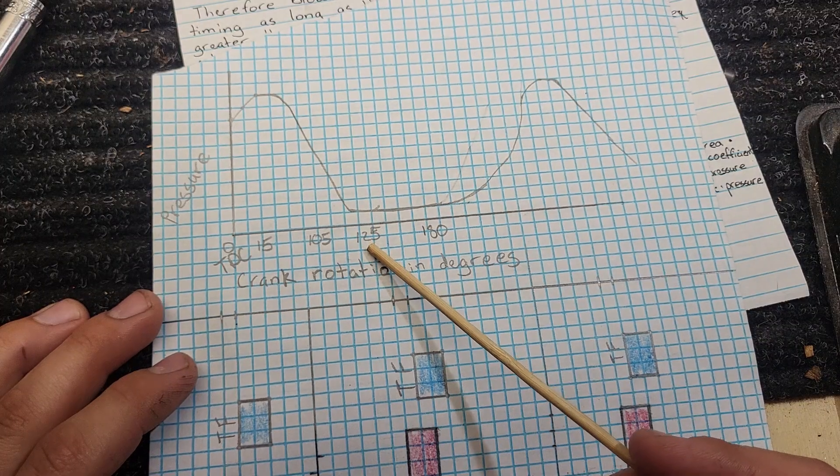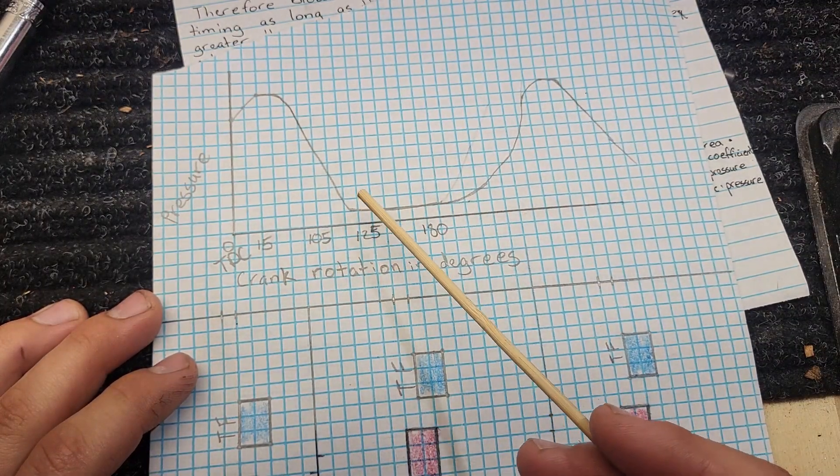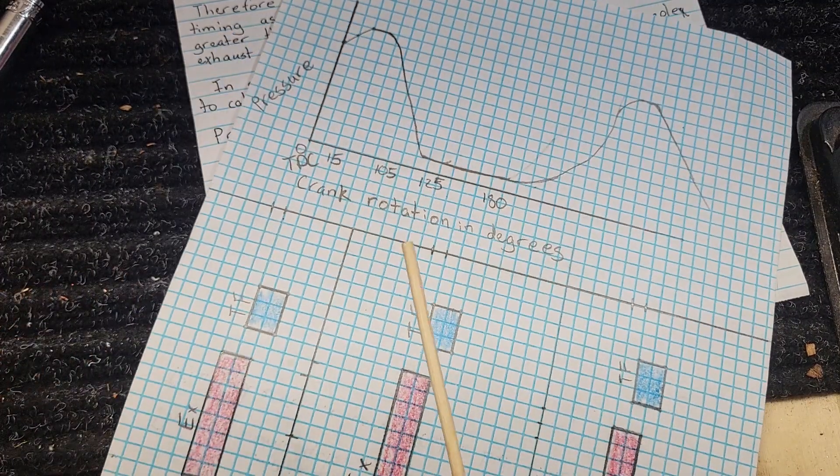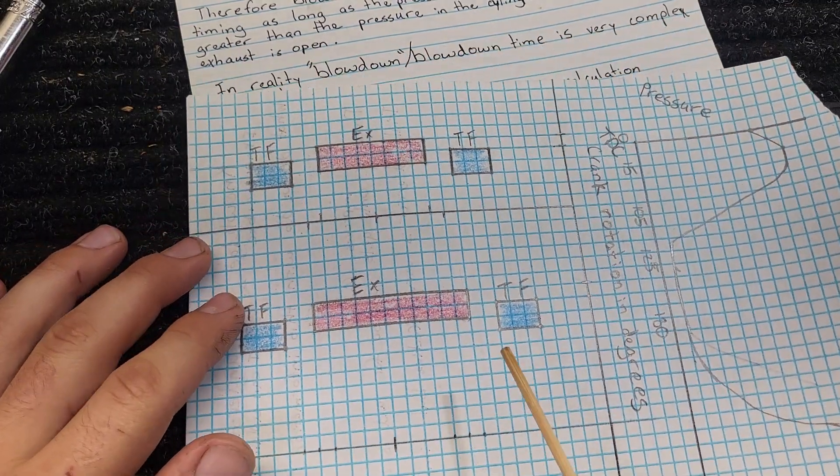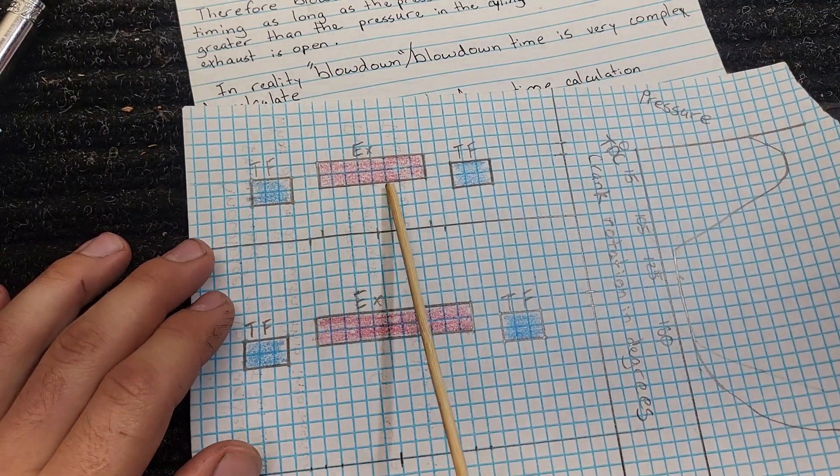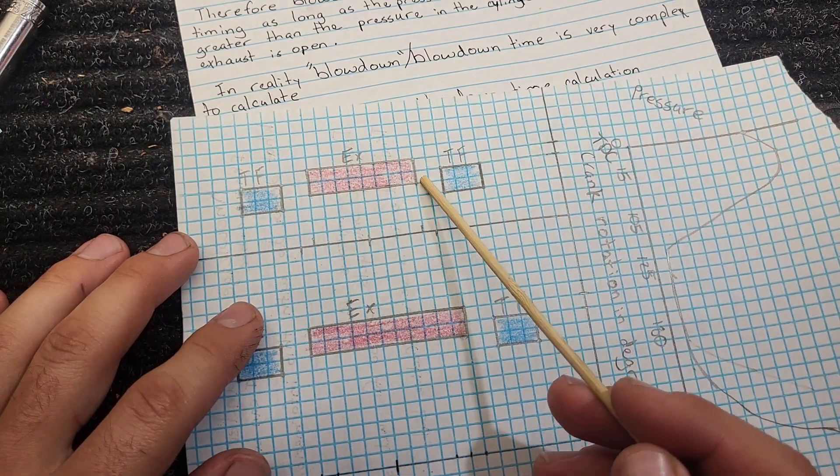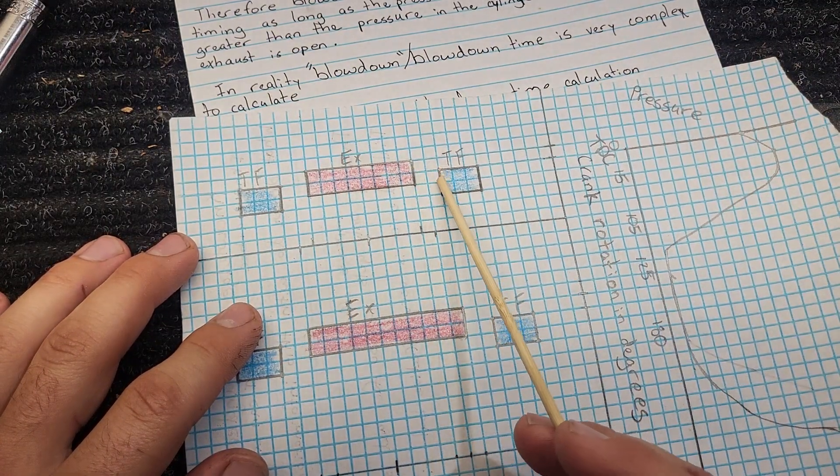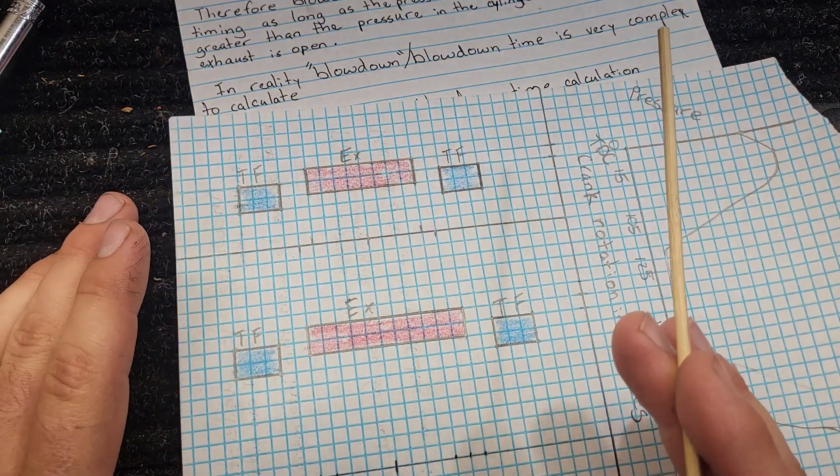Well, if your transfer is open, your exhaust is still open. There's still time for that exhaust gas to escape while the transfers are filling the cylinder. And you can see here the overlap between your exhaust port and your transfers. There is going to be some overlap between them because there just is.